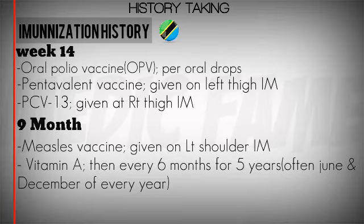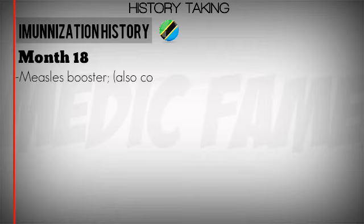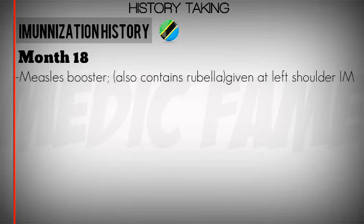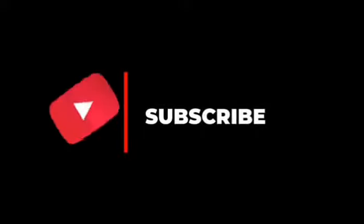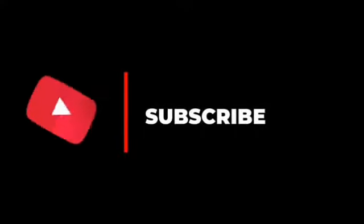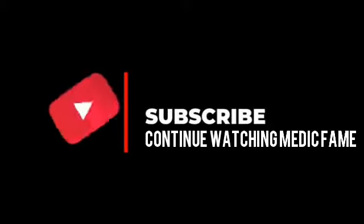Vitamin A is then given every six months for five years. At 18 months, a measles booster — which also contains rubella — is given at the left shoulder intramuscularly, and vitamin A continues every six months. We will continue with dietary history and developmental milestones in the next session.